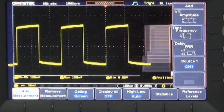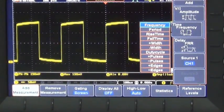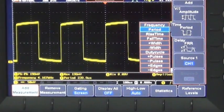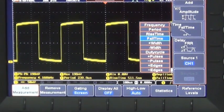Next, press frequency and select frequency, period, rise time, fall time.